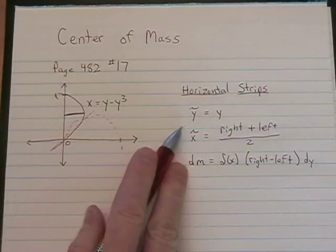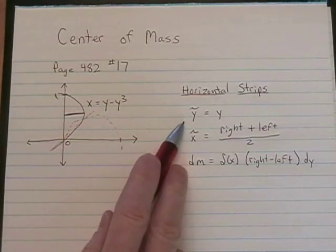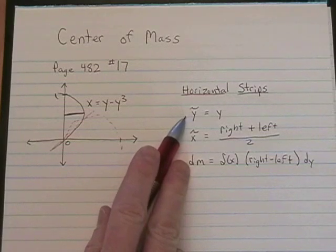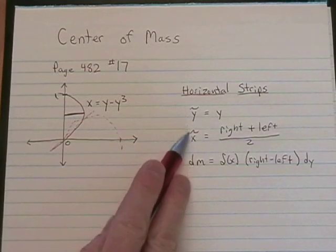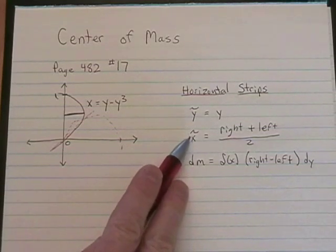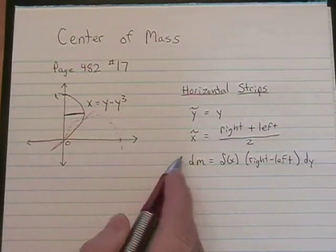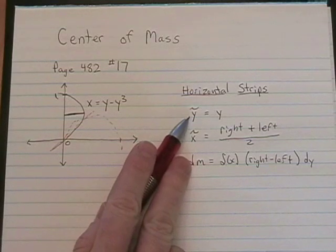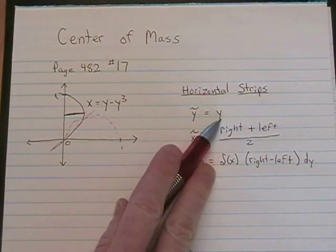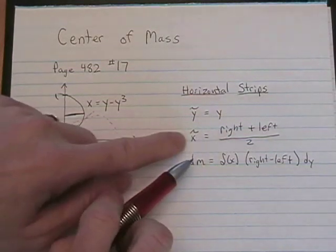A few bits of information that we need to gather when we're doing horizontal strips are the center of mass on a strip, which is tilde y and tilde x. For horizontal strips, the tilde y is easy. It's just y.